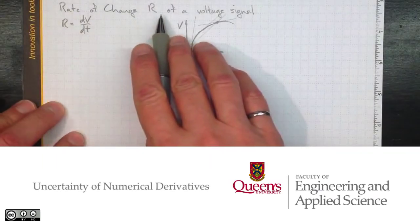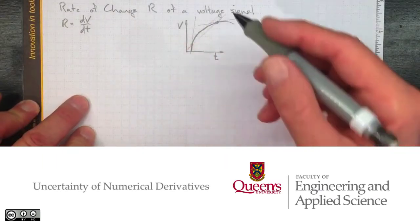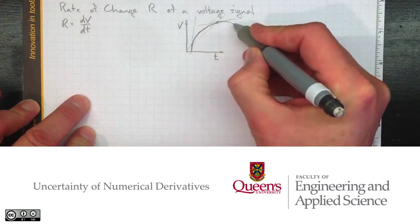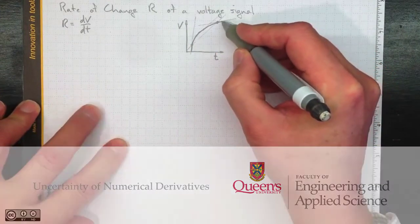If we want to measure the rate of change of some voltage signal that might represent a temperature or a position or something like that,